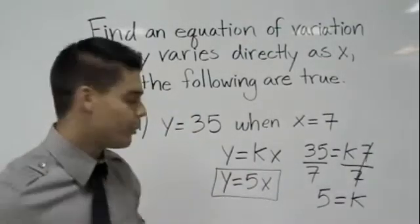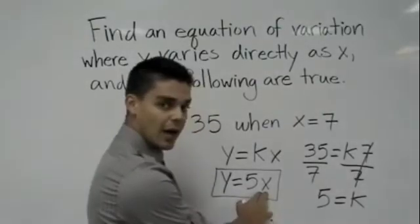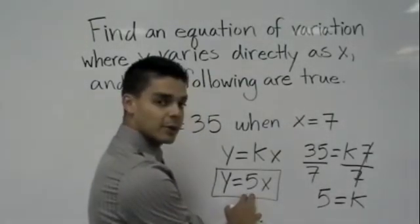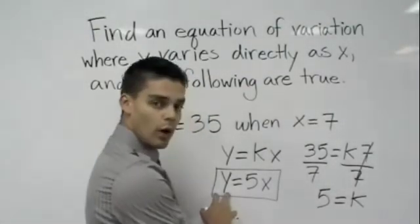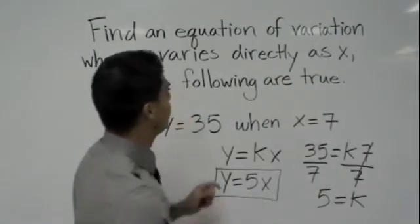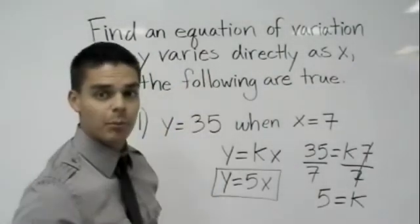So in our example, if you happen to work X hours, you always multiply that times 5 and that gives you your Y. Why? Because they vary directly. That's the important key guys.